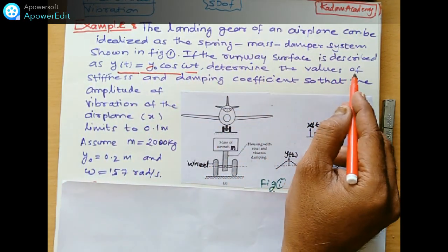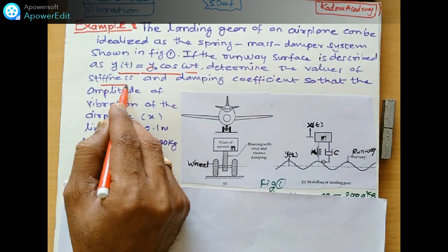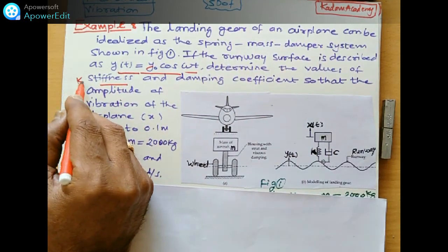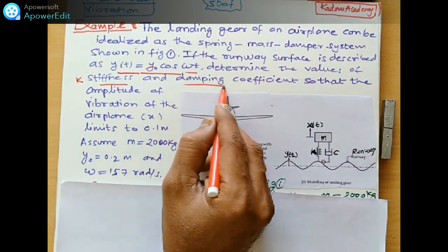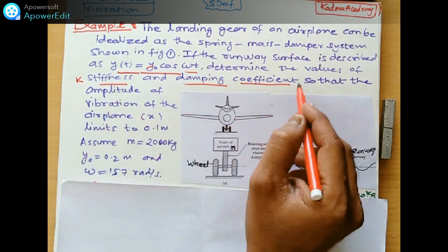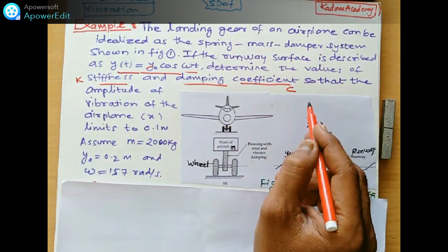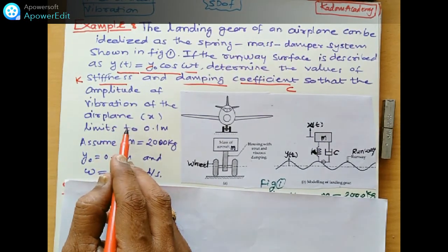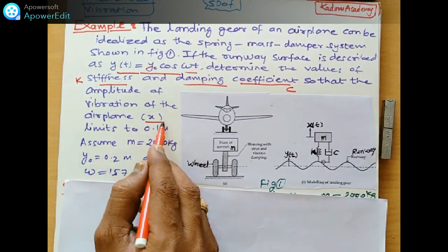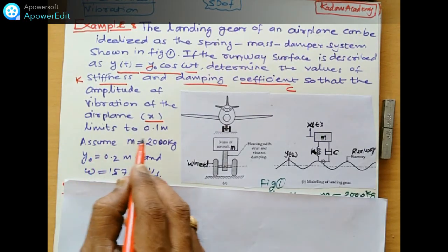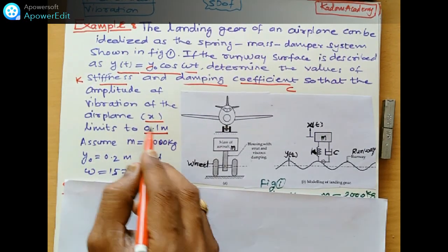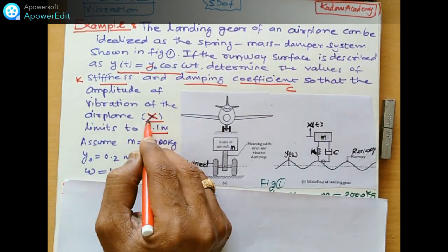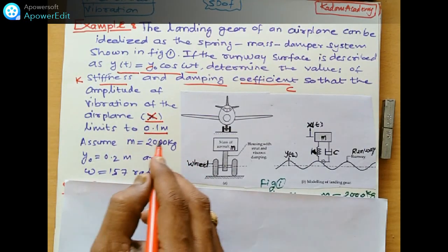If the runway surface is described as y(t) equals y0 cos omega t, determine the values of stiffness k and damping coefficient. We have to find out k and c. The amplitude of vibration of the aeroplane is limited to 0.1.